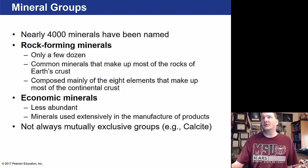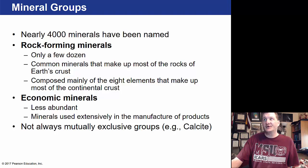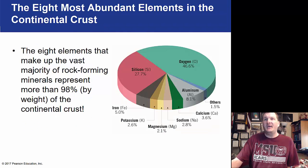There are over 4,000 minerals named already. Rock-forming minerals number only about a dozen — these are common minerals that make up most of the earth's crust, composed mainly of eight elements. Economic minerals are less abundant but used extensively in manufacturing. The most abundant elements in the earth's crust are oxygen and silicon, making up the majority of it.